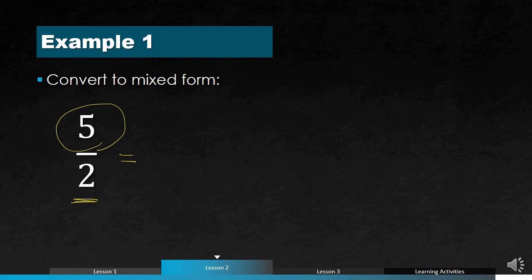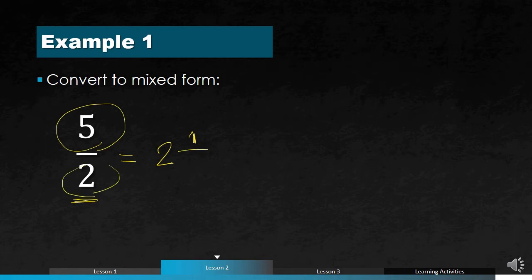The answer is 2, because 2 times 2 is 4, so we have a remainder of 1 — since 5 minus 4 equals 1. That remainder of 1 becomes the numerator of the proper fraction, and we simply copy the denominator which is 2. So the result is 2 and 1 half.